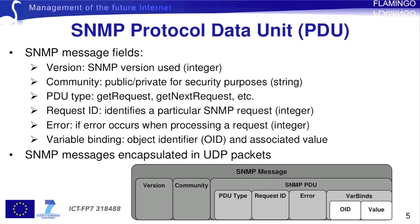The request ID identifies a particular request. The error field takes an integer to identify a possible error. And the list of variable bindings is a sequence of two fields: the object identifier and the associated value of that object. It is worth mentioning that the SNMP messages are encapsulated in UDP packets.